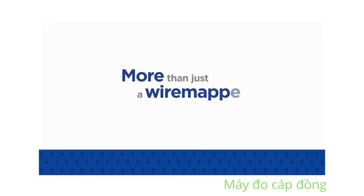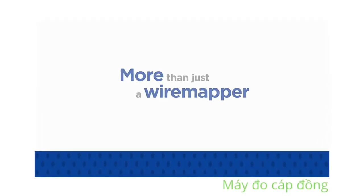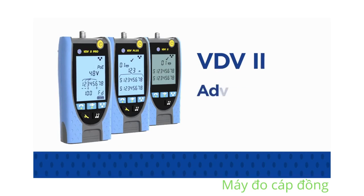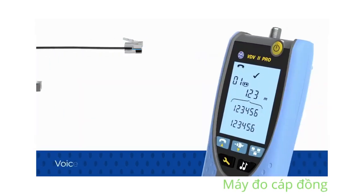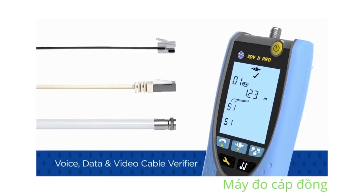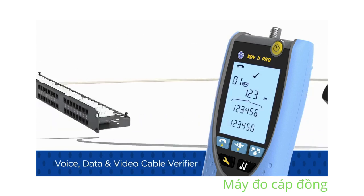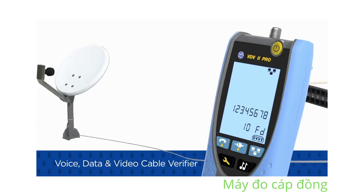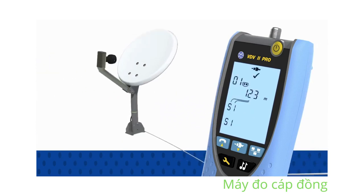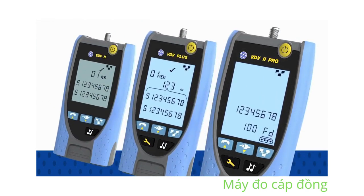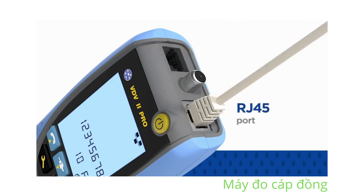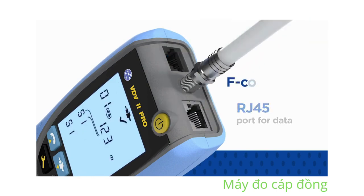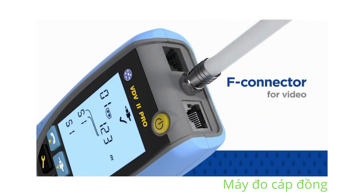More than just a wire mapper, the VDV2 series utilizes advanced test technology to verify voice, data, and video cabling. Test telephone, Ethernet, and coaxial cables with a single tester. Each VDV2 includes RJ11 and RJ12 ports for voice, an RJ45 port for data, and an F connector for video.